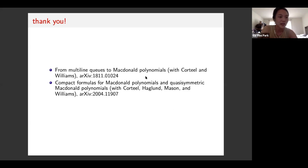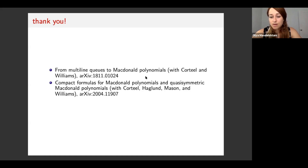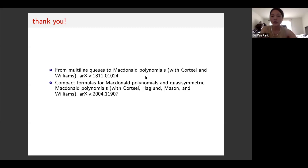There is one more question. Christian asks: is the compactness of the MLQ formula related to the version of HHL that he gave? The multiline queue formula is related to HHL — it's also a tableau formula of the same flavor. In fact, the set of multiline queues gives a subset of HHL tableaux, except we define our statistics slightly differently. That's where the compactness comes from.